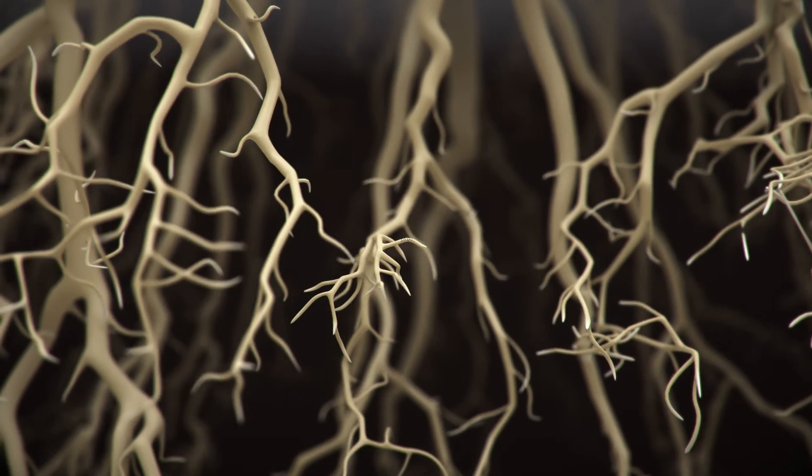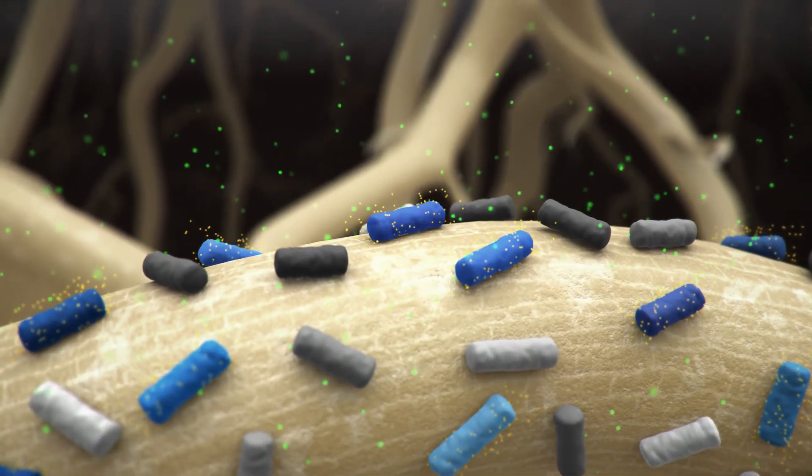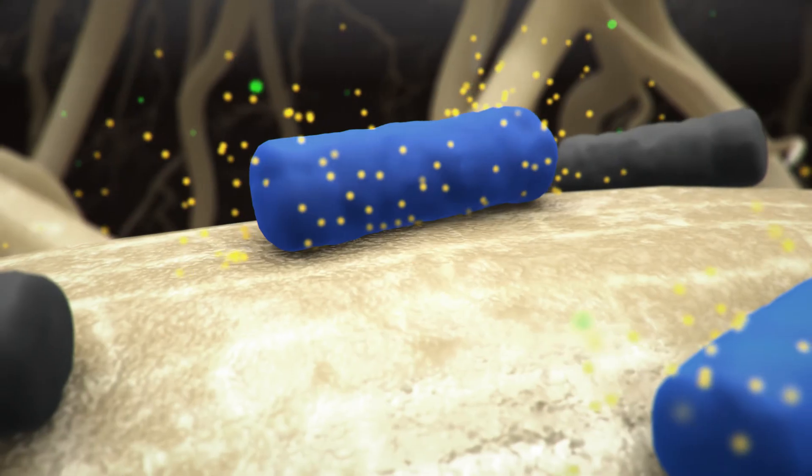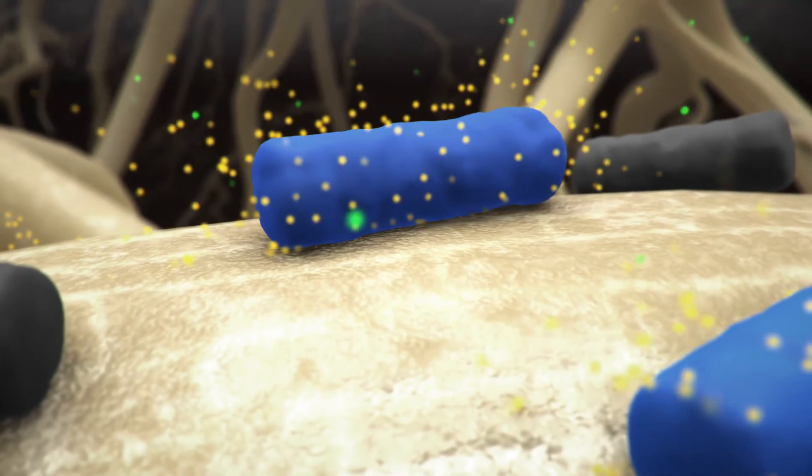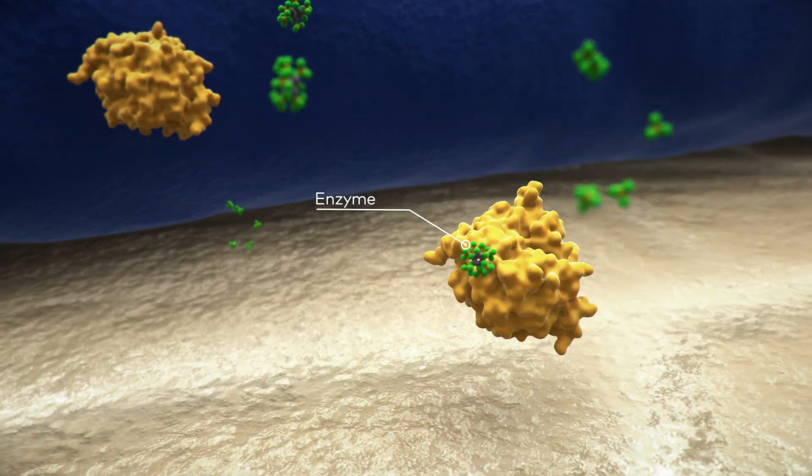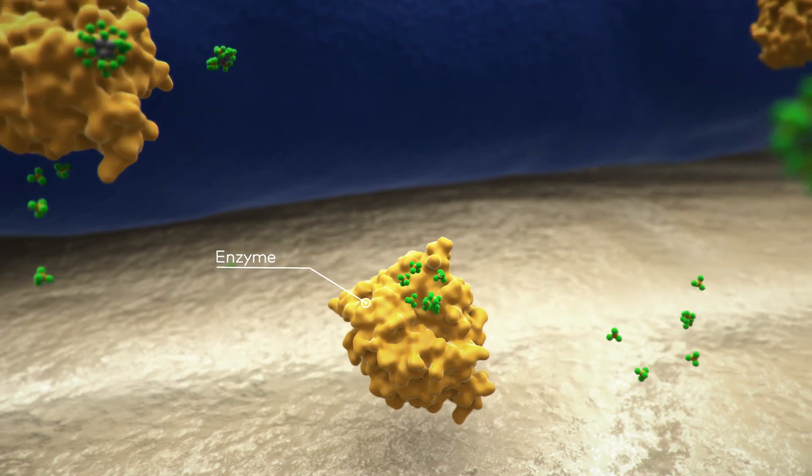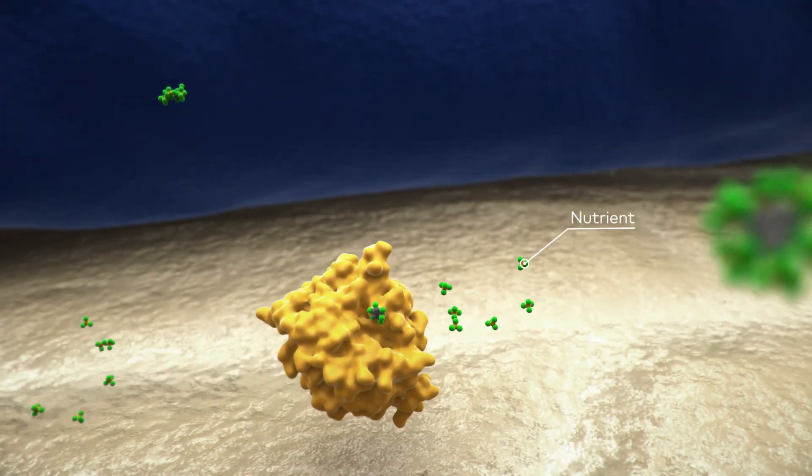They can help crops grow by making it easier for the roots to take up nutrients and by preventing diseases. This enables us to reduce the use of chemical fertilizers and pesticides and to produce healthier food.